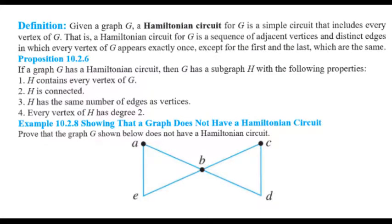The last definition in this lecture is the Hamiltonian circuit. A Hamiltonian circuit in a graph G is a simple circuit that includes every vertex of G. Since a simple circuit does not allow repetition of vertices or edges, a Hamiltonian circuit is a sequence of adjacent vertices and distinct edges in which every vertex of G appears exactly once — no repeated vertices except for the first and last, which are the same.